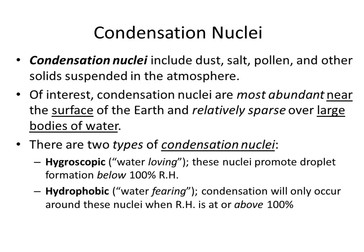Cloud condensation nuclei help get the party started and they come in two forms. The first type actually loves taking water vapor and making it become a liquid — they're called hygroscopic cloud condensation nuclei. They're itching to make you go from vapor to liquid; honestly, it doesn't even have to be 100% relative humidity. The other ones are the reluctant ones — 'phobic' means fear — so these are reluctant to get the party started, but they'll do it if they have to.